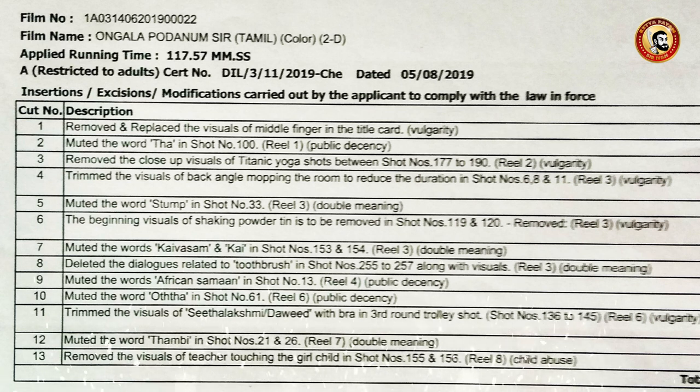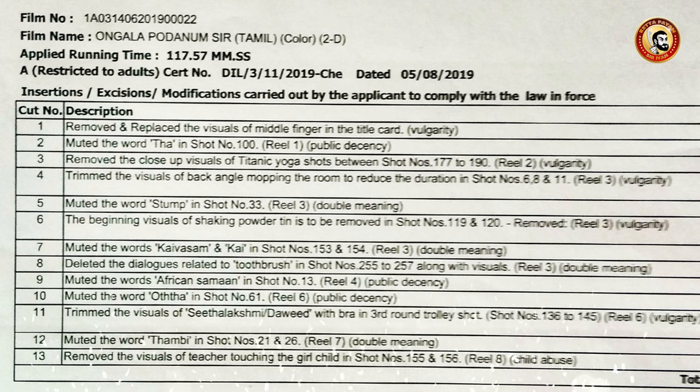Cut number 7: Mute the words KAIVASOON and KAI — double meaning. Cut number 8: Delete the dialects related to toothbrush — double meaning.